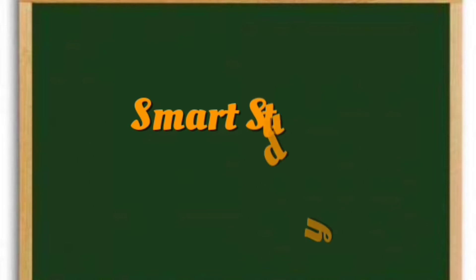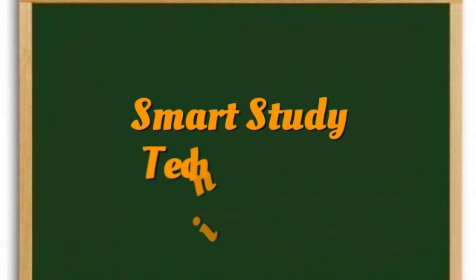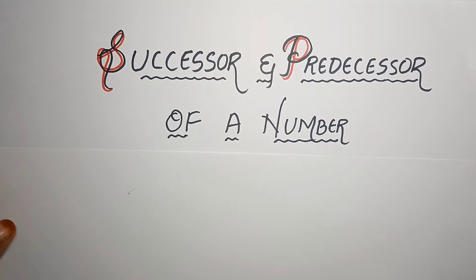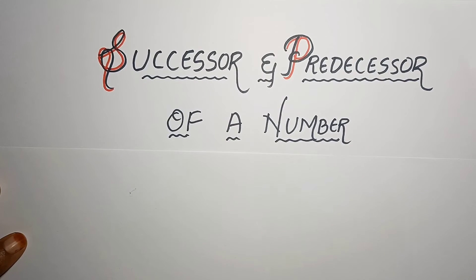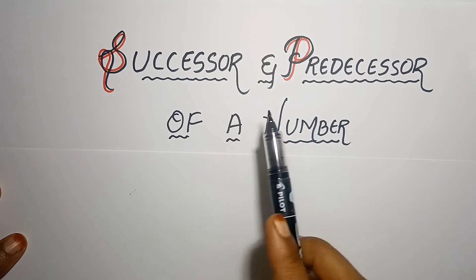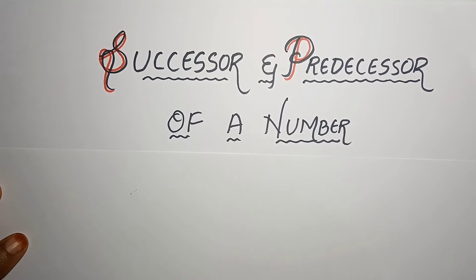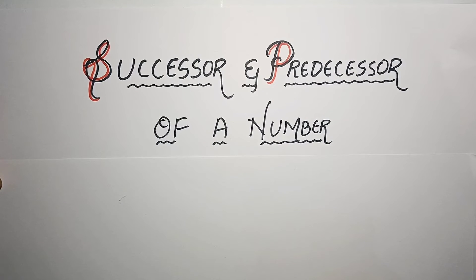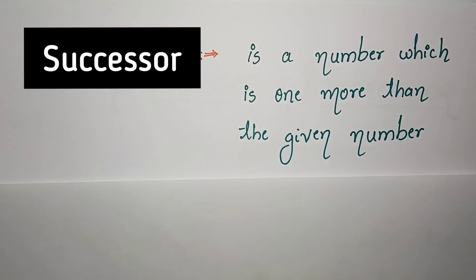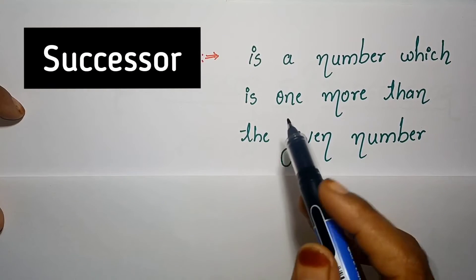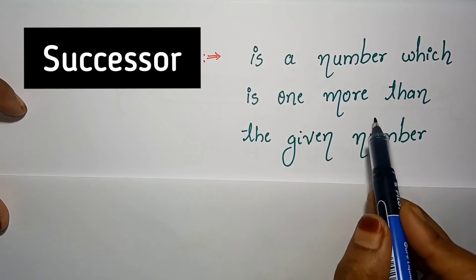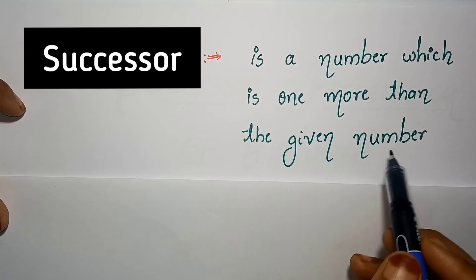Hello everybody, welcome to our channel Smart Study Techniques. Today I am going to do a video on what are successors and what are predecessors of a number. First, let's start with successor. What is successor? Successor is a number which is one more than the given number.